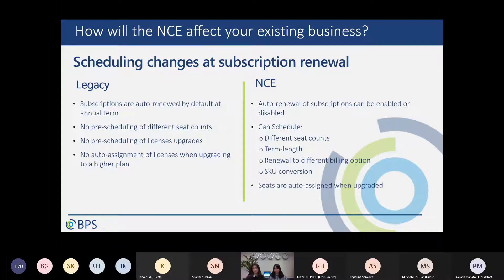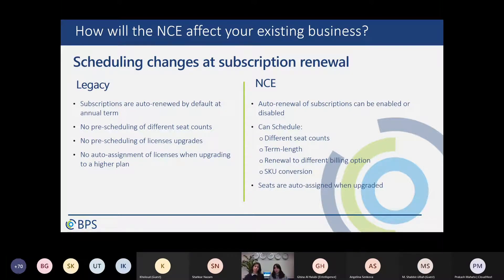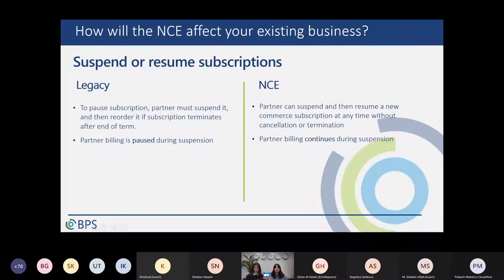A very interesting feature is SKU conversion. Previously you couldn't pre-schedule any upgrades — so if you are currently running Business Basic and want to upgrade to Standard, Premium, or any other enterprise license, you couldn't pre-schedule that. Now you can do a full upgrade — if you have 100 licenses you can upgrade all 100 — or a partial upgrade, choosing the quantity you want to upgrade. The seats will be automatically assigned, so you don't have to do the work twice.